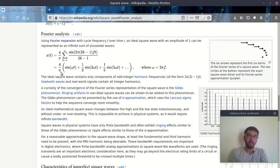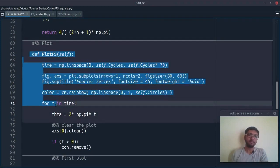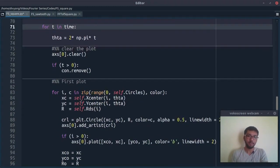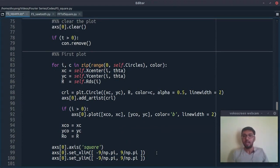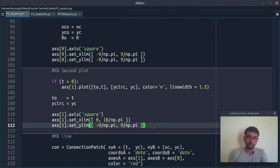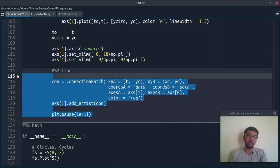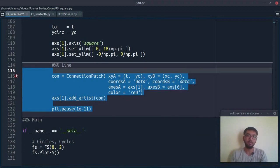This function will generate the radius for nth circle, as you can see here: 4 upon pi, 1 upon 3, 1 upon 5, and so on. This is the plotting part. In this first part I am creating that animation of circle, and this second part will generate our square wave-like pattern.